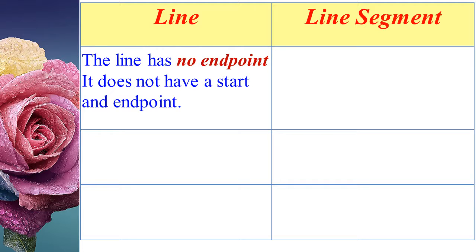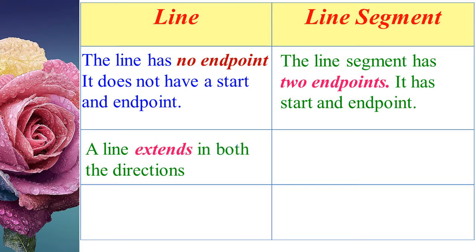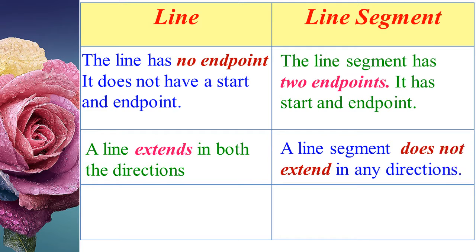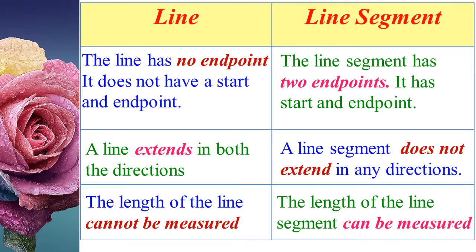Let us see the difference between line and line segment. A line has no end points — it does not have a start and end point. A line segment has two end points — it has a start and end point. A line extends in both directions, but a line segment does not extend in any direction. The length of a line cannot be measured, but the length of a line segment can be measured.